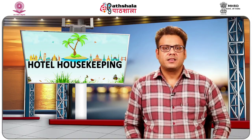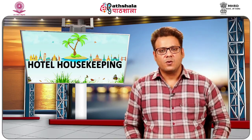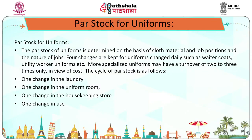Now we are discussing par stock for uniforms. The par stock for uniforms is determined on the basis of cloth material, job position, and the nature of the job. Four changes are kept for uniforms changed daily, such as waiter and utility worker uniforms. More specialized uniforms may have a turnover of only 2 or 3 times. Considering cost, the cycle of par stock is as follows: one uniform change in the laundry, one change in the uniform room, one change in the housekeeping storeroom, and one change in use.